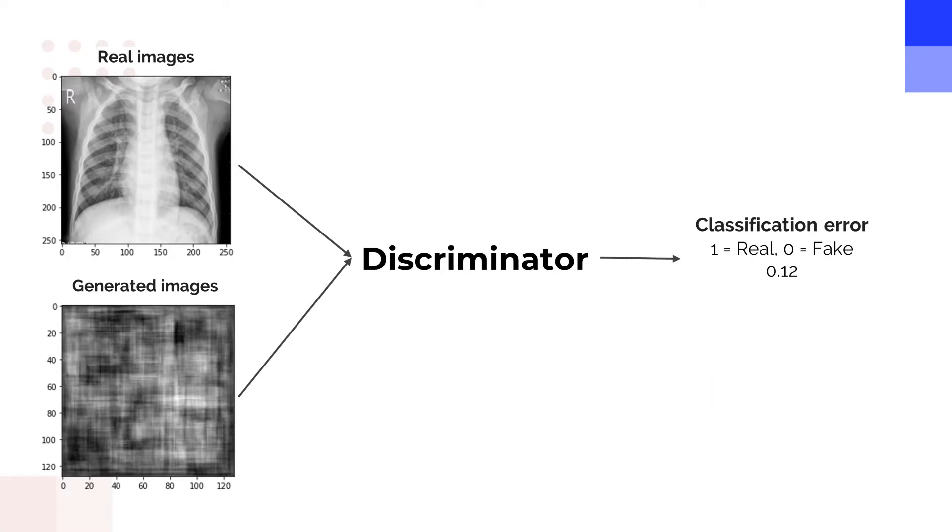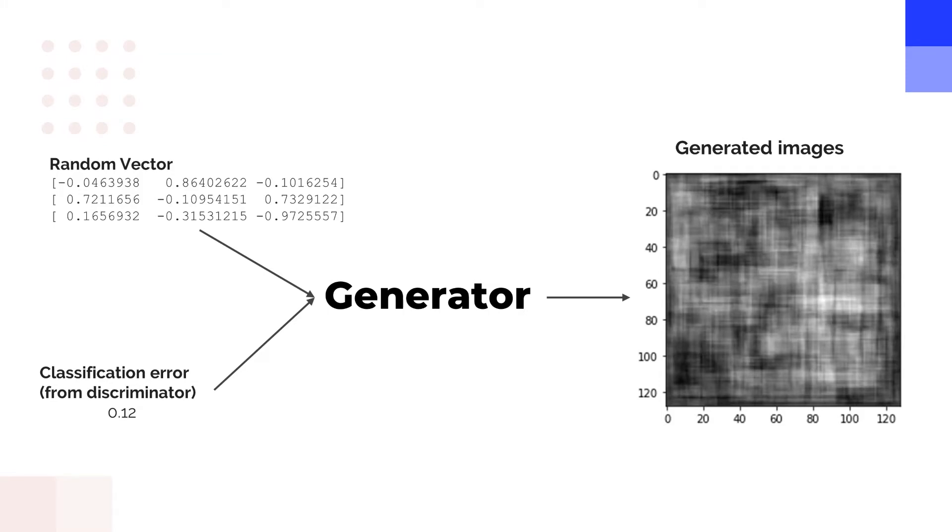The discriminator attempts to distinguish the generated images from the real images and produces a classification error describing the generated images as either 1, real, or 0, fake, and it learns how to discriminate better over time. The generator generates images by converting a random vector uniformly distributed between negative 1 and 1 into an image of the same size. The generator uses the classification error from the discriminator to generate images which the discriminator cannot distinguish from.